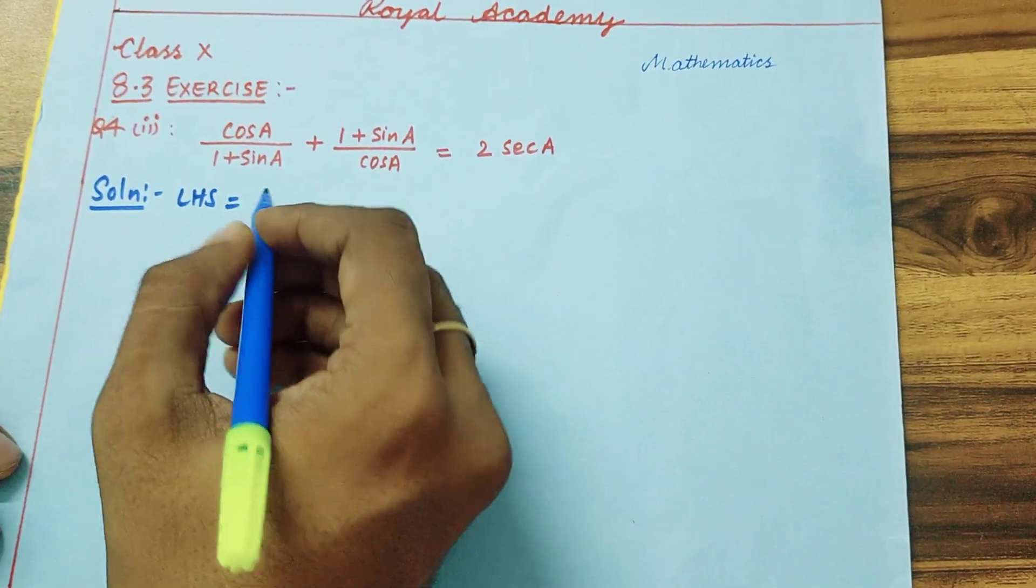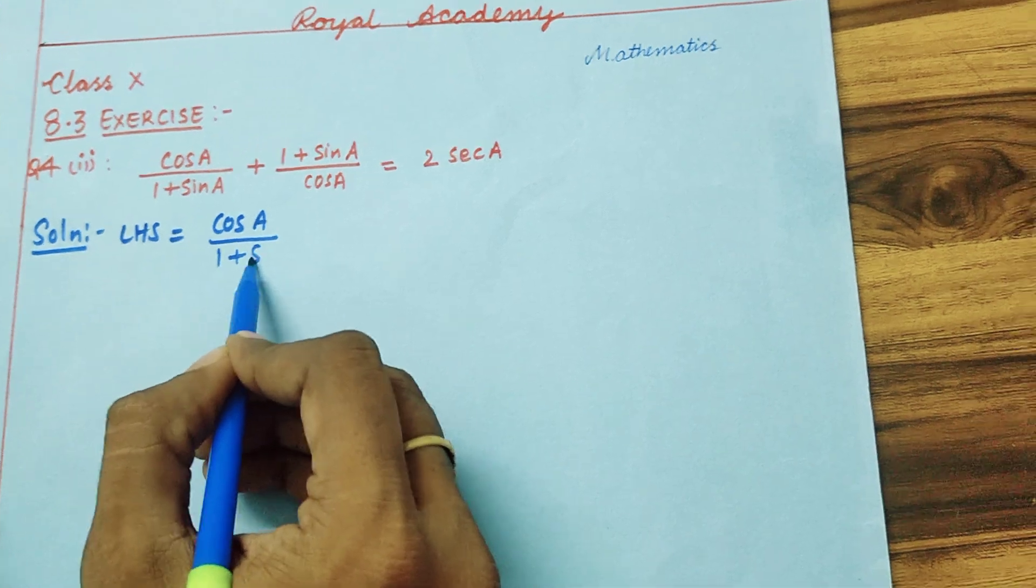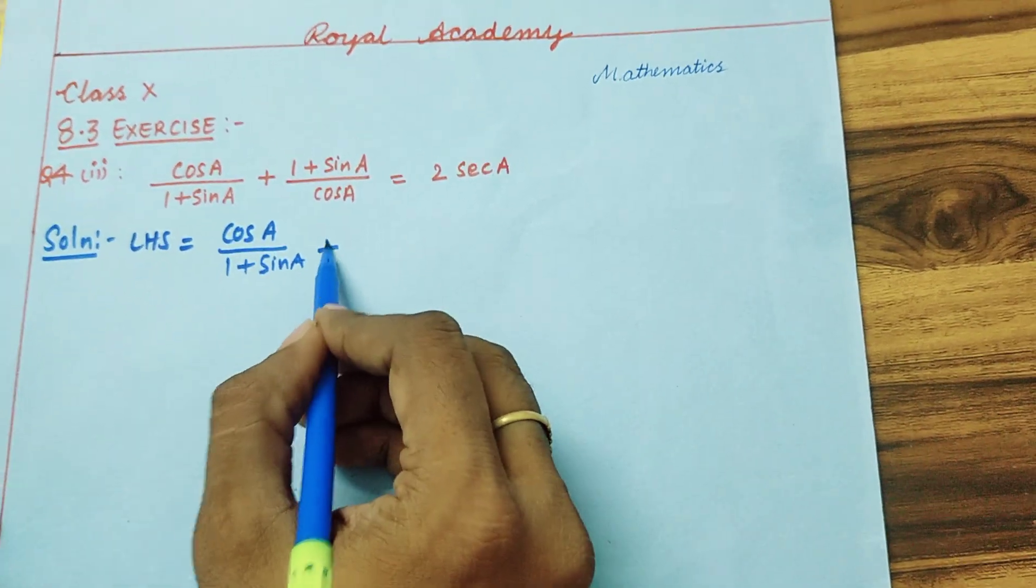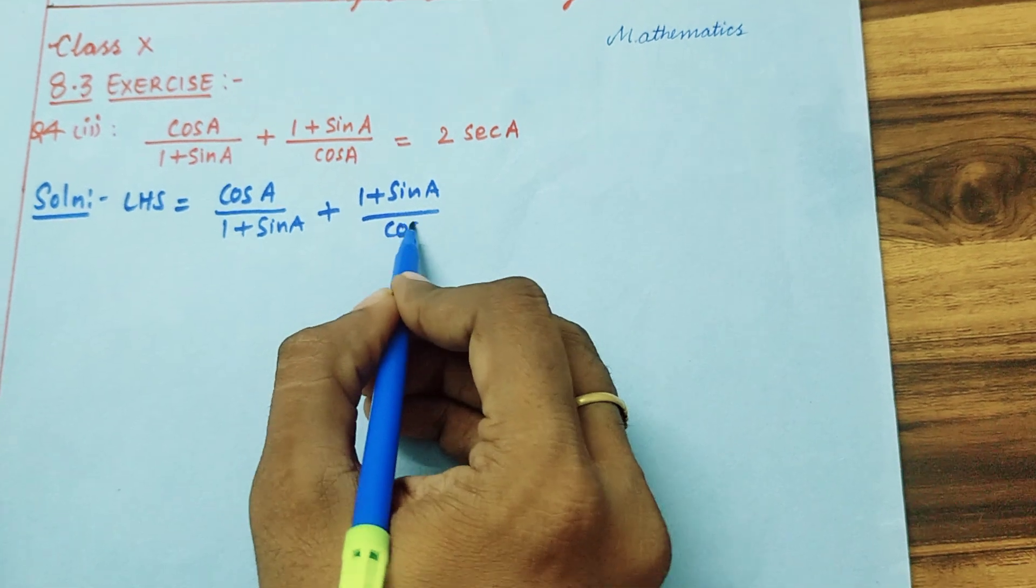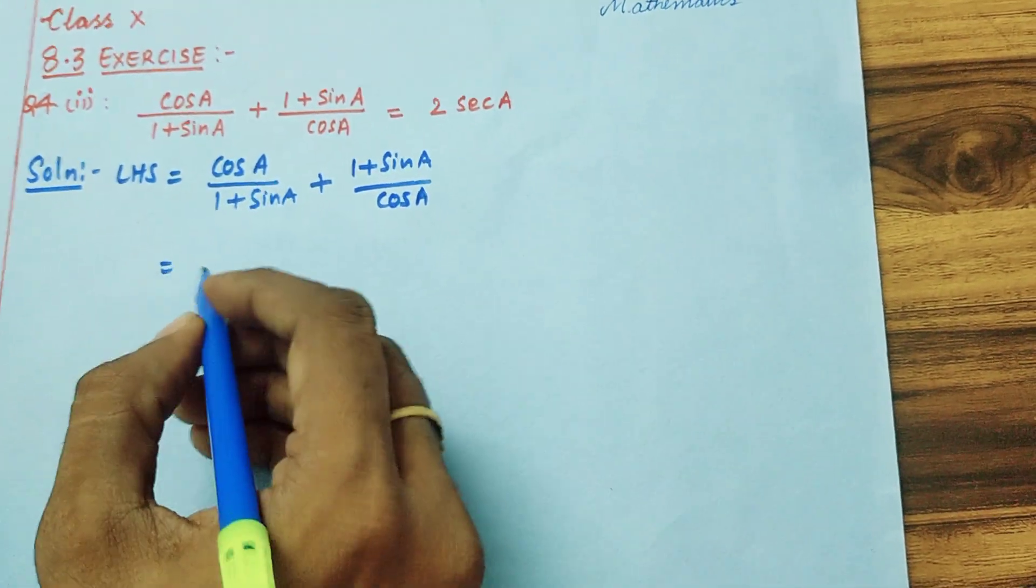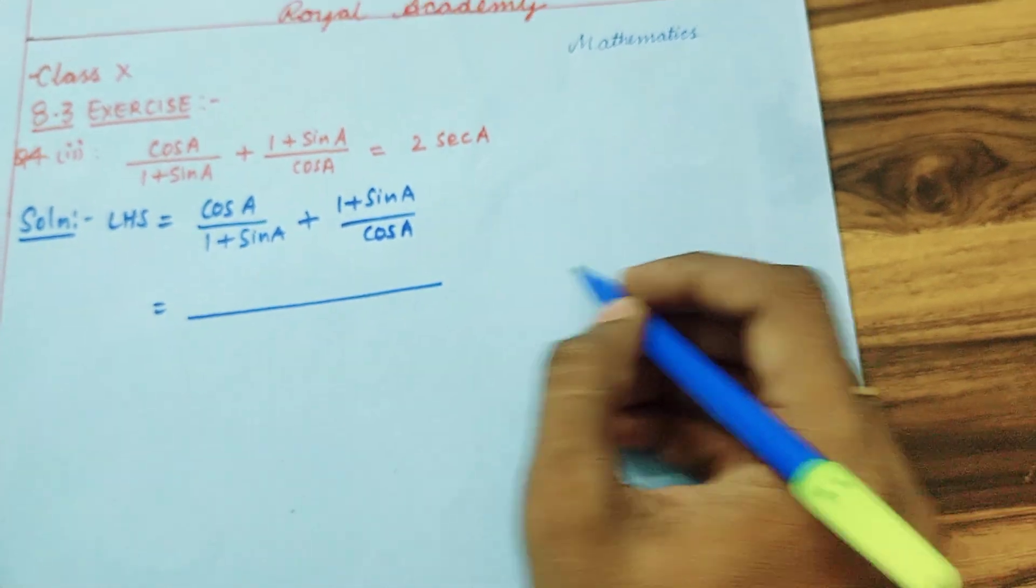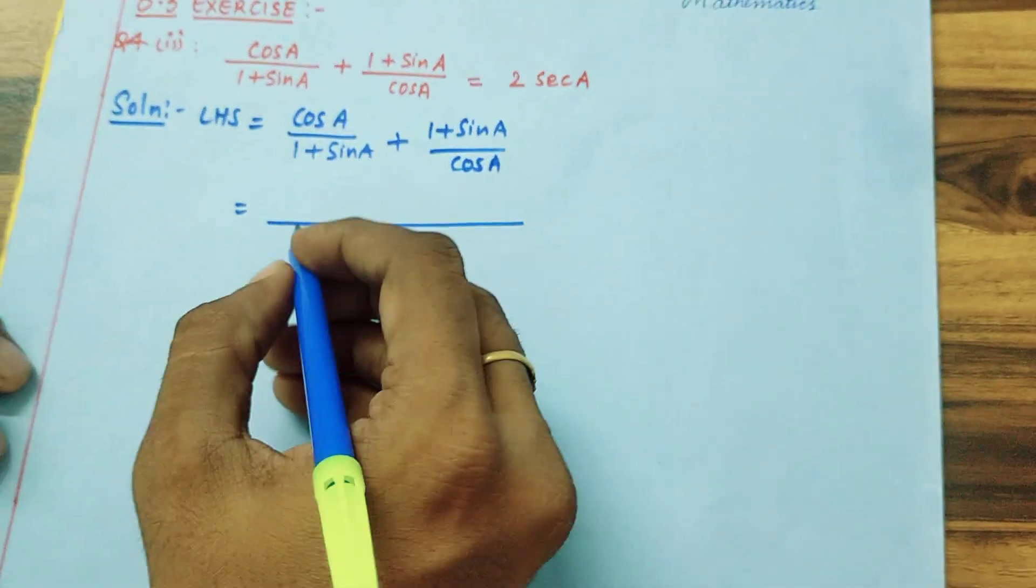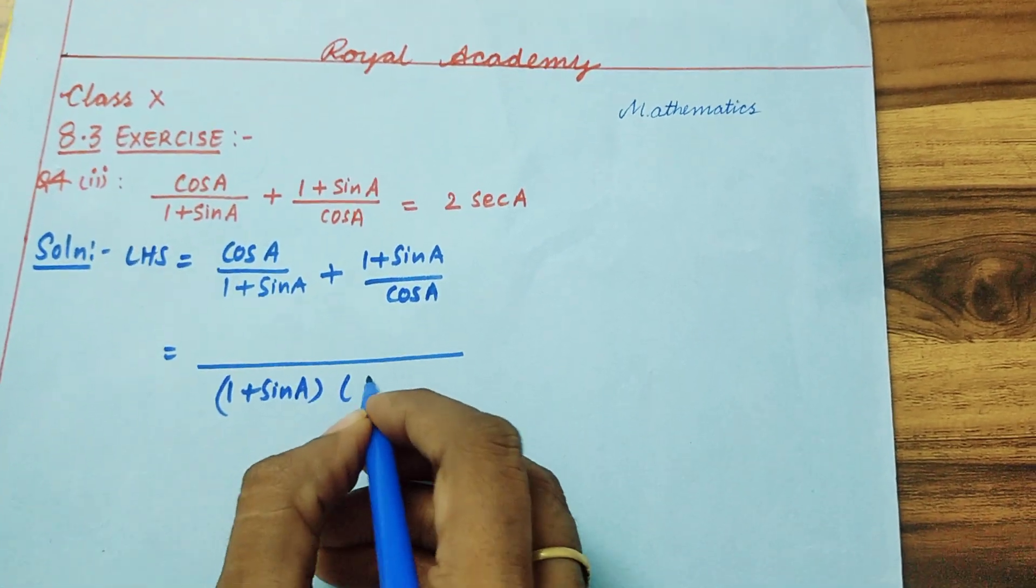I am supposing LHS which is given as cos A by 1 plus sin A plus 1 plus sin A by cos A. Now we have to take the LCM of both the terms. LCM will be product of these two, that is 1 plus sin A times cos A.